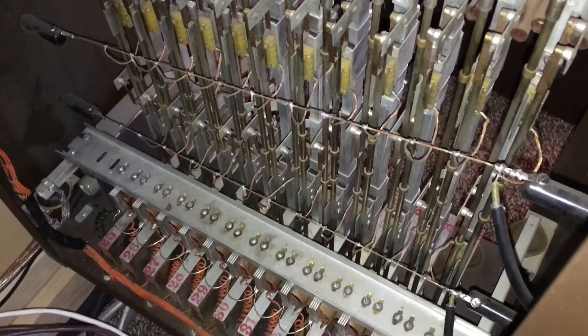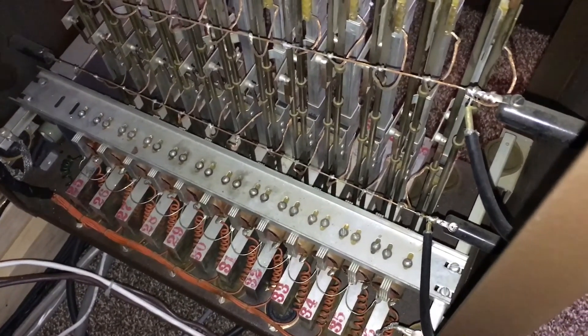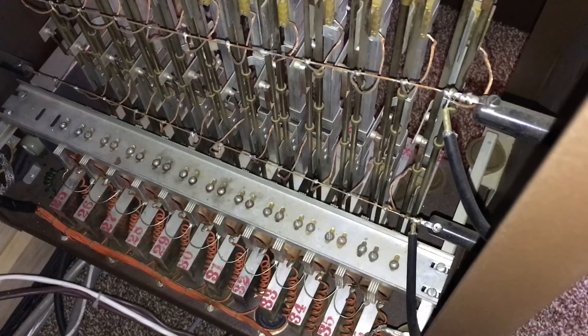Down at the bottom, you can see a row of barrel-shaped coils. Those are the coils for the strikers.